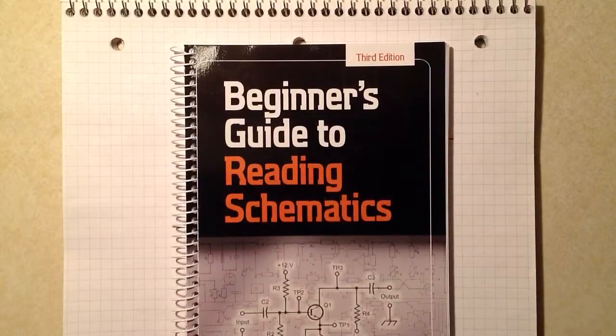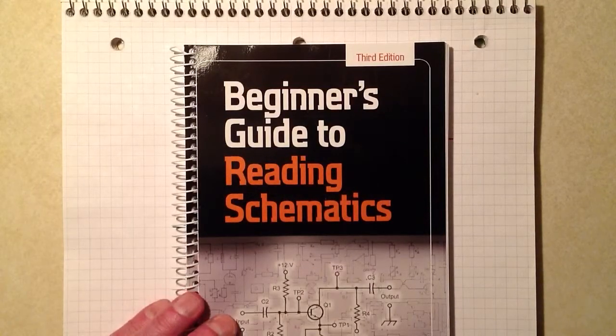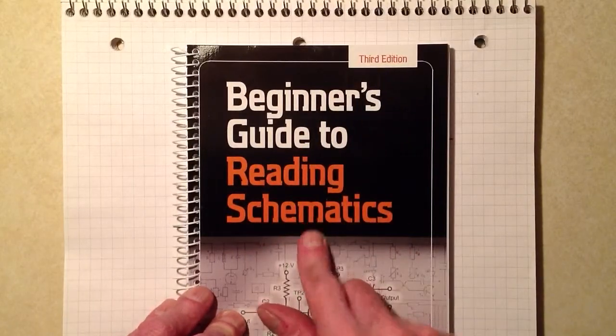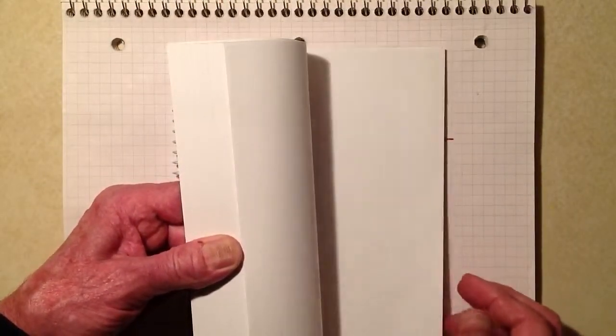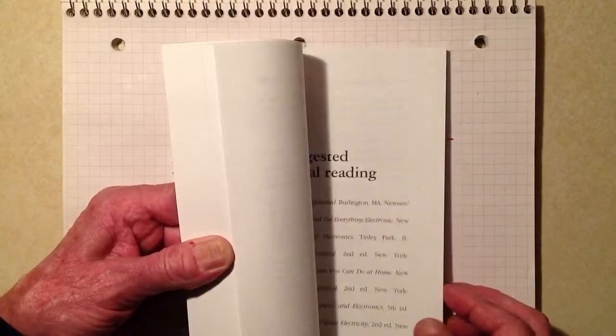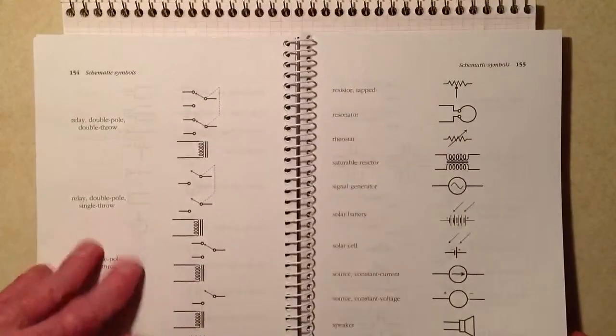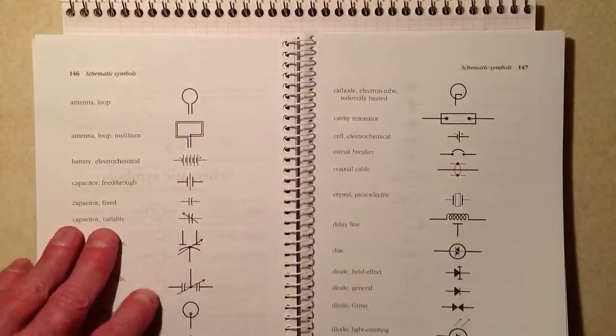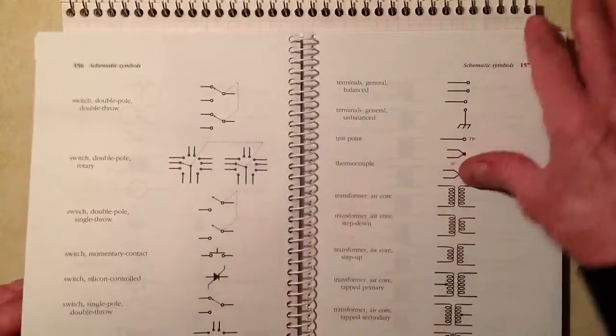So, once again, Beginner's Guide to Reading Schematics, published by McGraw-Hill, October of 2013. I highly recommend it for reading and for drawing schematics. One of the bonuses of this book, and most of my electronics books, is a comprehensive table of schematic symbols in the back, an appendix. All the schematic symbols you're ever likely to encounter in your journey through electronics engineering.